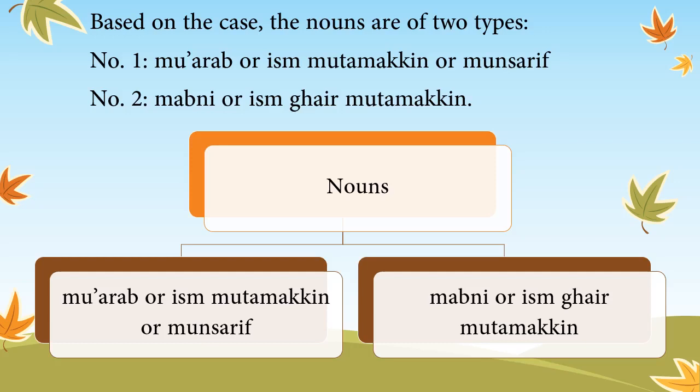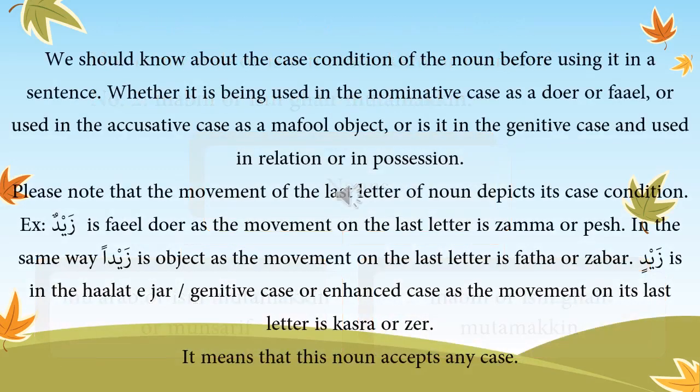Based on the case, the nouns are of two types. Number 1: Mu'arab, or ism-i-mutamakin or munsarif. Number 2: Mabni, or ism-i-ghair mutamakin. We should know about the case condition of the noun before using it in a sentence — whether it is in the nominative case as a doer (fa'il), accusative case as a maf'ool (object), or genitive case used in relation or possession.